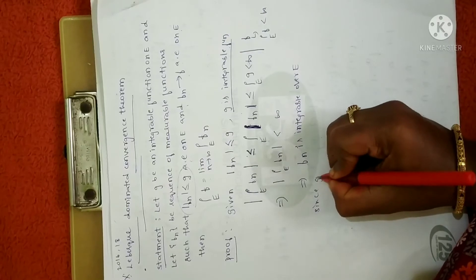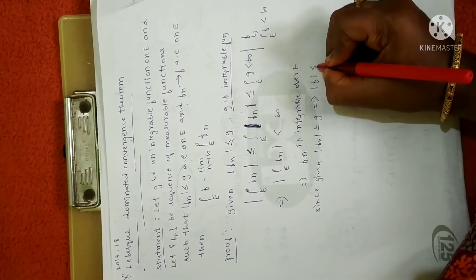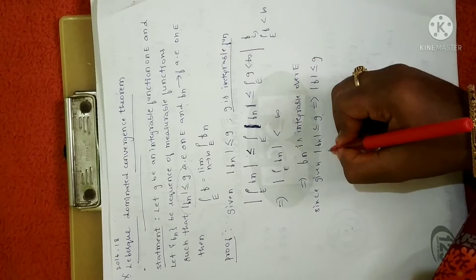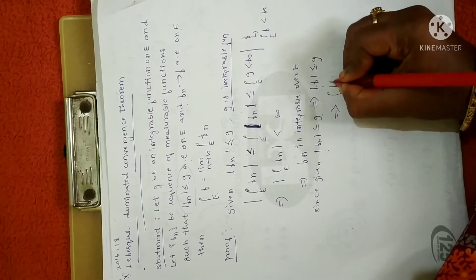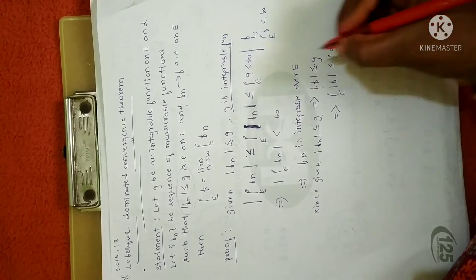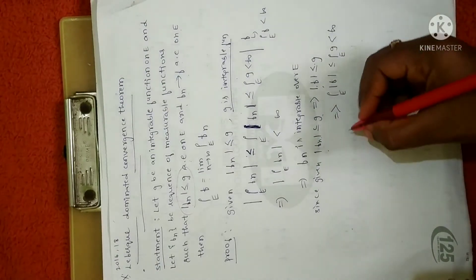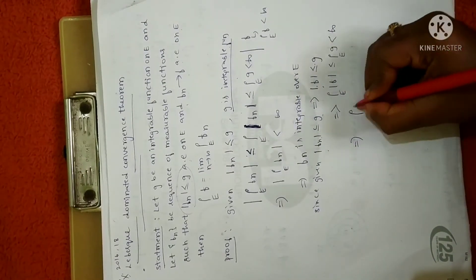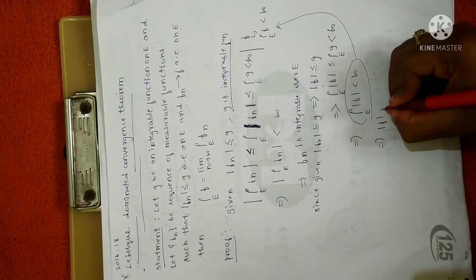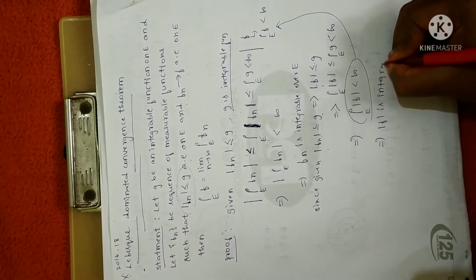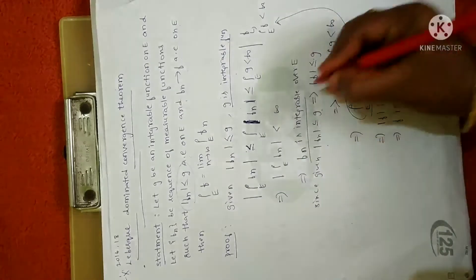Moreover, since |fn| ≤ g for all n, this implies that |f| ≤ g as well. If |f| ≤ g, then the integral over E of |f| is less than or equal to the integral over E of g. Since g is integrable, this is less than infinity by the definition of integrability. This implies the integral of |f| is less than infinity, satisfying the definition of integrability. Therefore |f| is integrable, and since |f| is integrable, f is integrable. So what we have proved is that both fn and f are integrable.